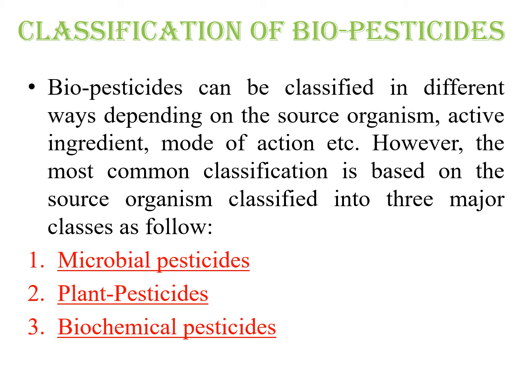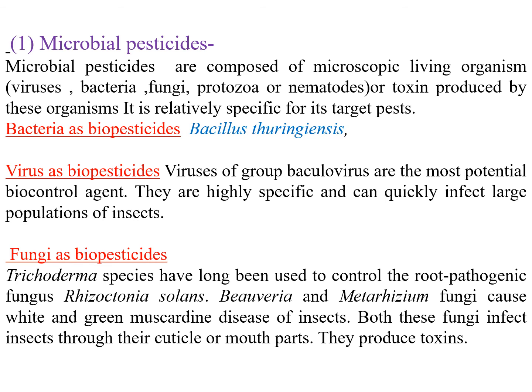Let us know about the classification of biopesticides. Biopesticides can be classified in different ways depending on their source of organism, their active ingredients, or mode of action. However, the most common classification is on the basis of source of organism, and on this basis, three major classes are followed: first, microbial pesticides; second, plant pesticides; and third, biochemical pesticides.